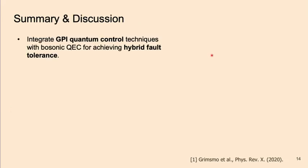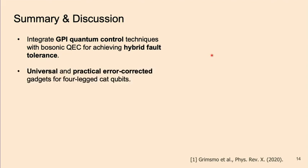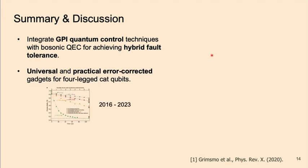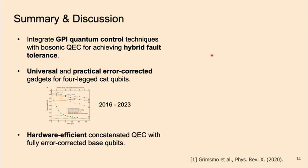To sum up: in this talk, we integrated GPI quantum control techniques with bosonic error correction to achieve full fault tolerance in the hybrid architecture. Using these tools, we construct a universal set of error-corrected gates for the four-legged cat qubits. The four-legged cat qubit has existed for seven years but only at the memory level, because it's really hard to do logical gates. Hopefully our results bridge this gap, and all these results lead to a hardware-efficient and concrete quantum error correction architecture using fully error-corrected base qubits.